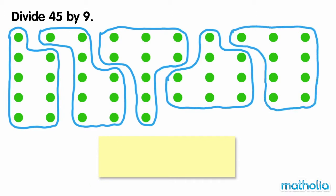There are 5 groups of 9 dots. So 45 divide 9 equals 5.